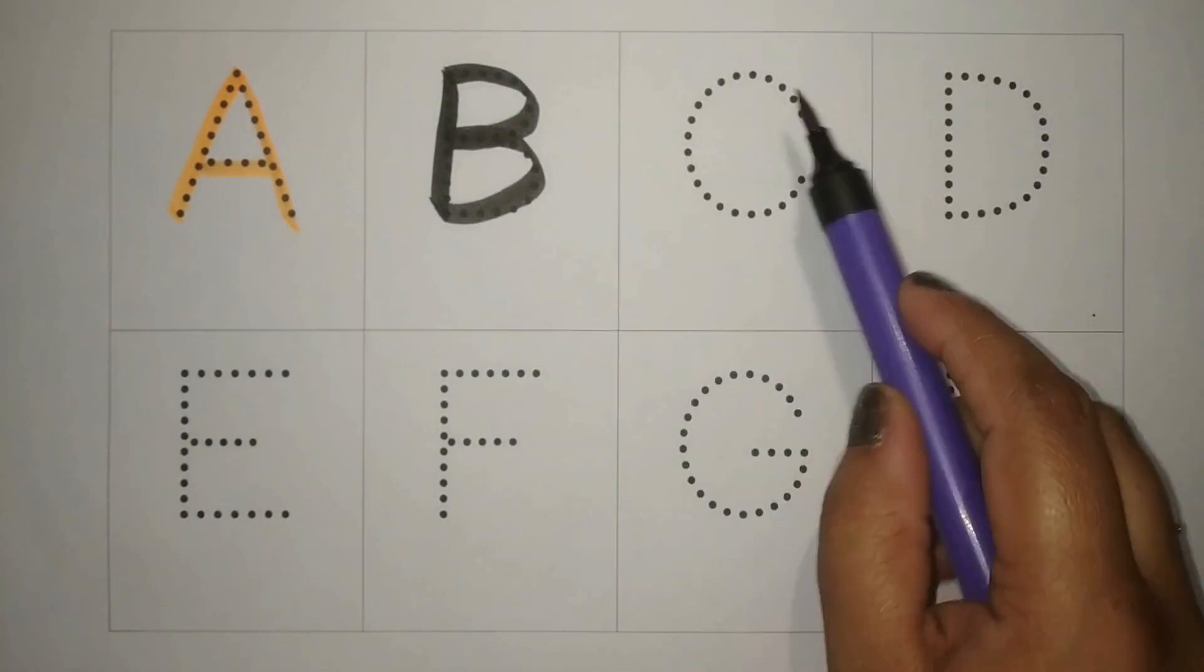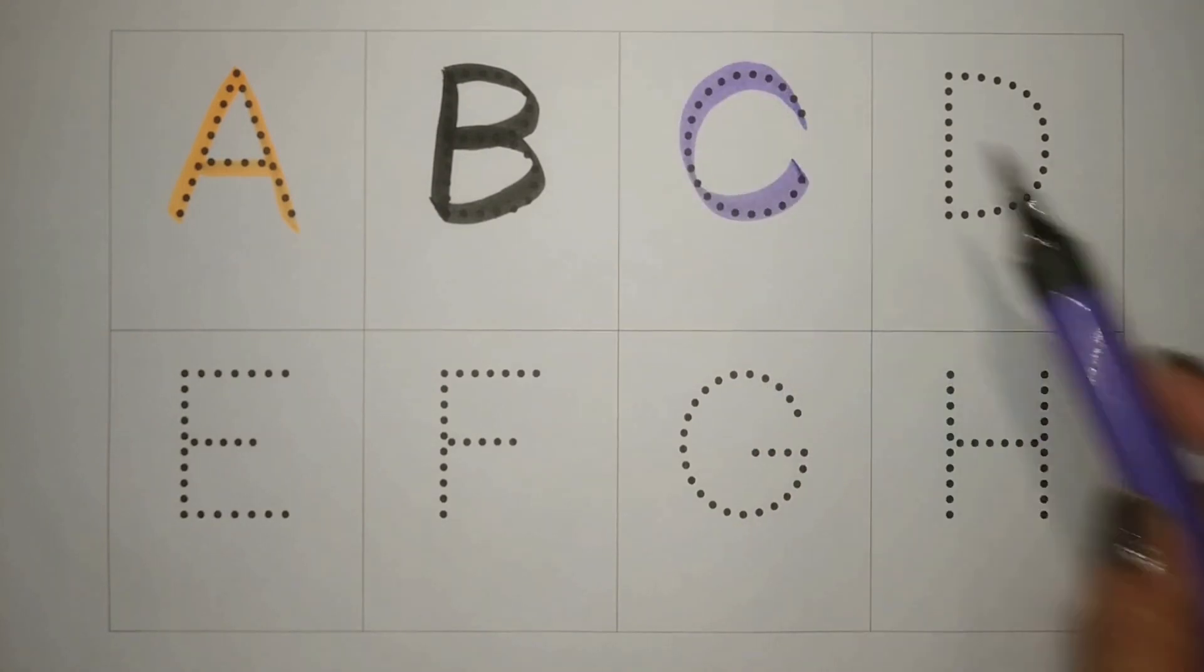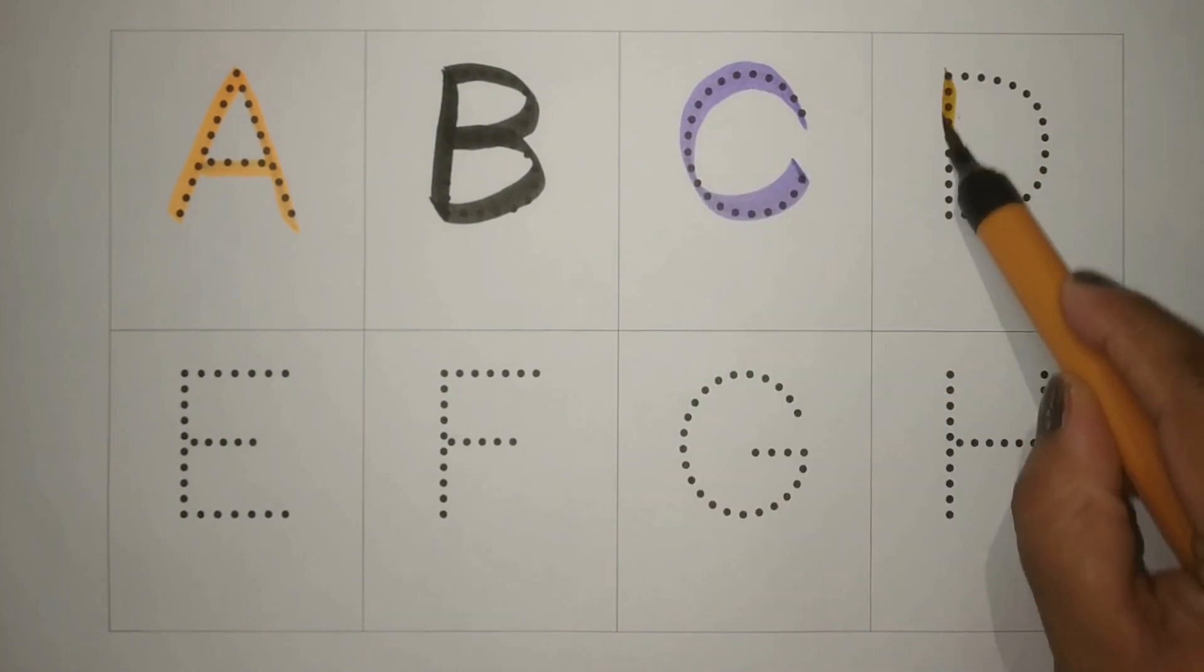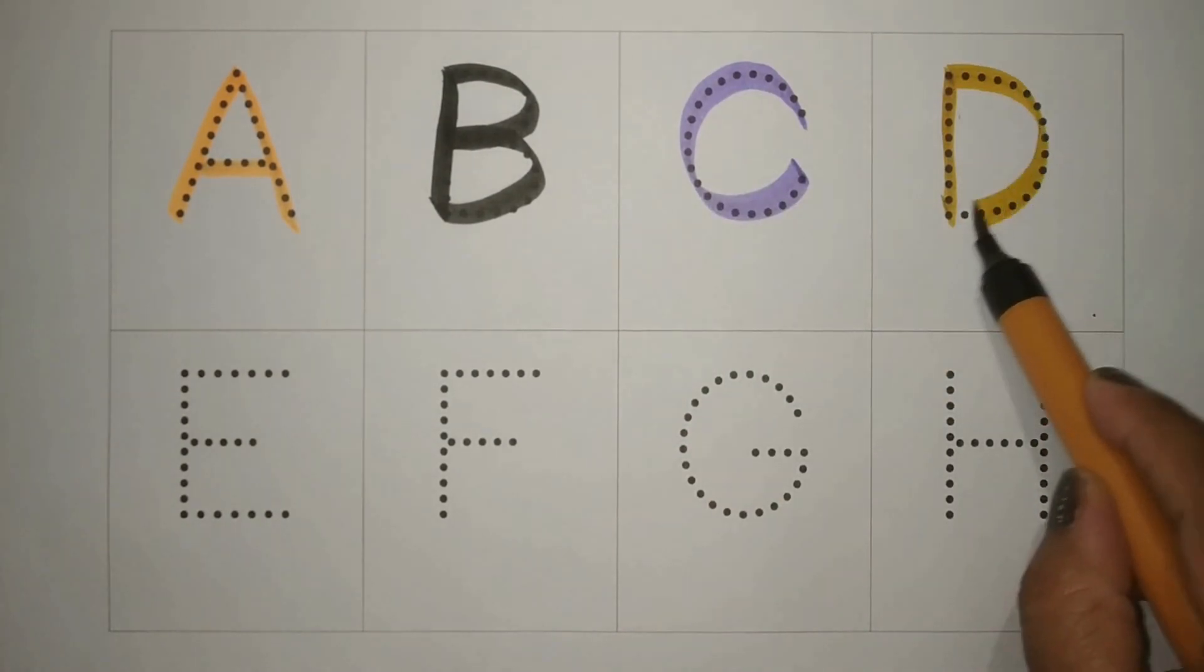Purple, C, C for cat, billy, meow meow. Mustard, D, D for dog, kutta, bobo.